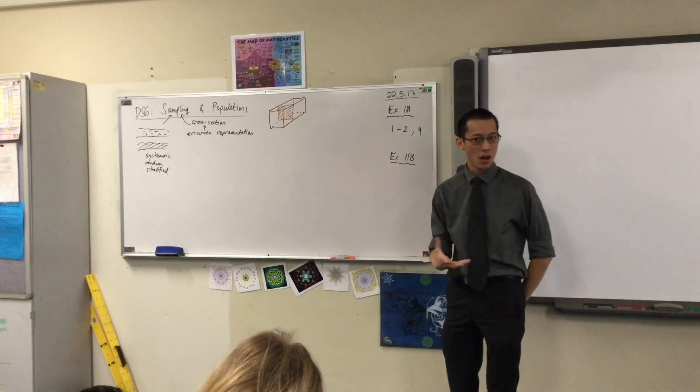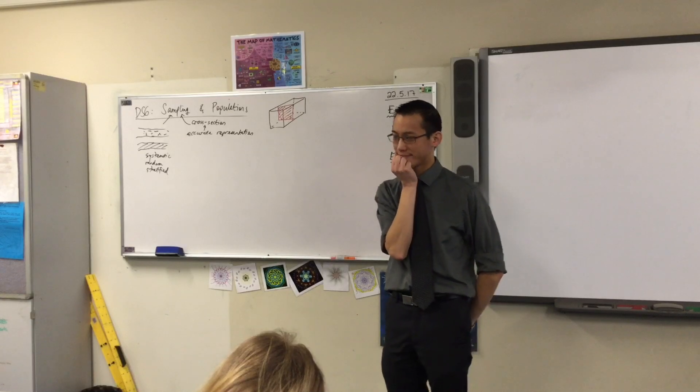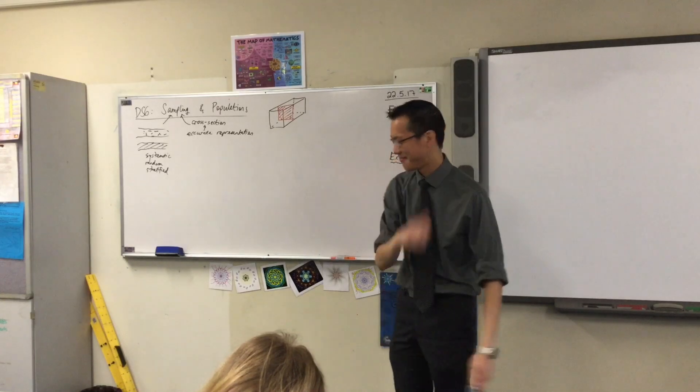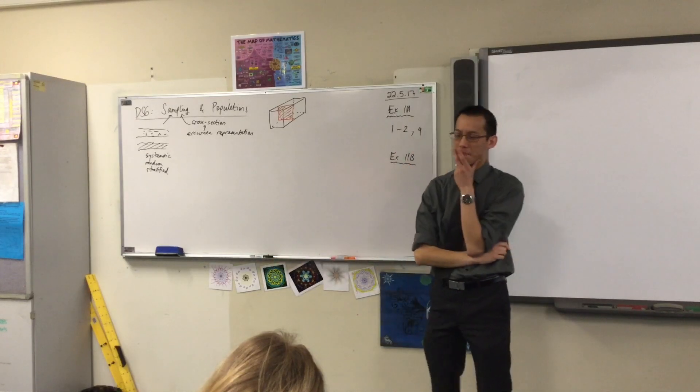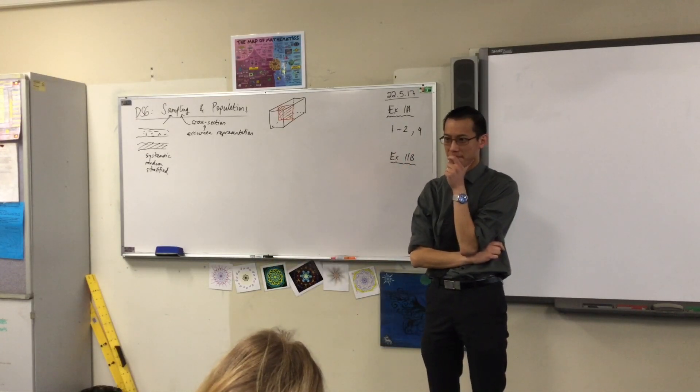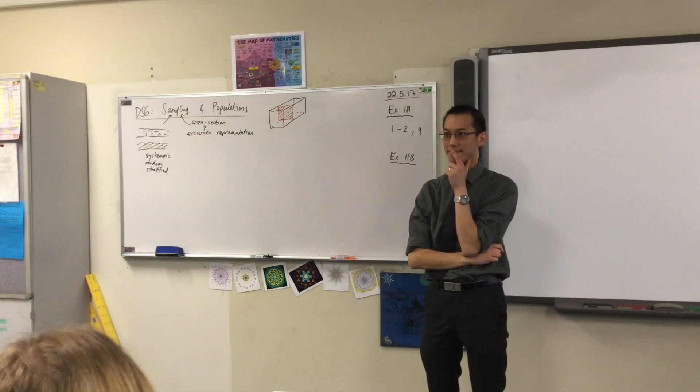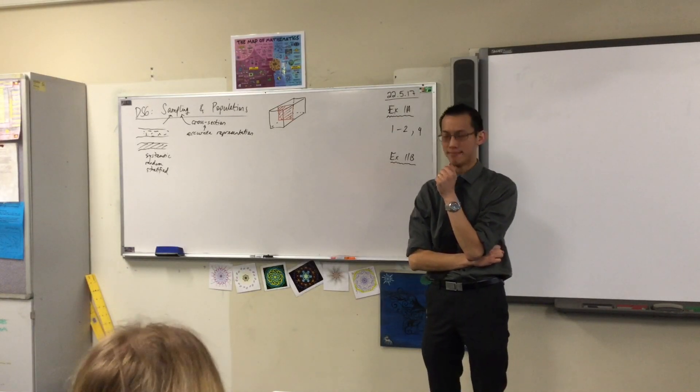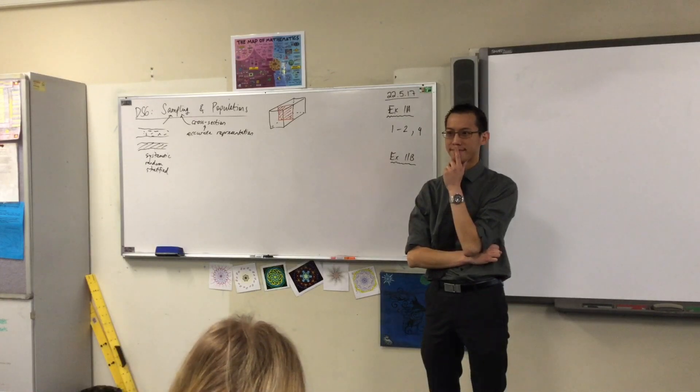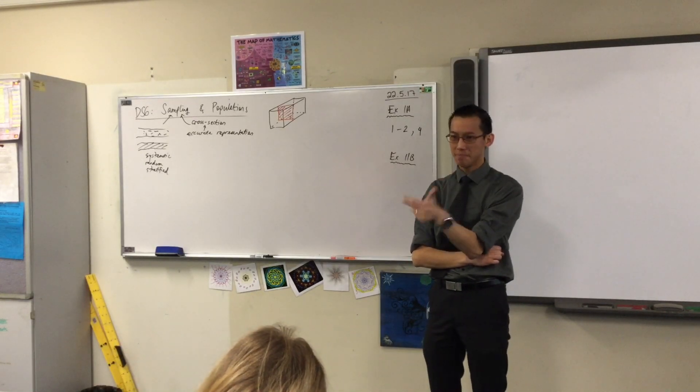What would it mean to have a systematic sample of a population? What could we do? Systematic is like, I remember this very specific example, you're standing in a restaurant at the door, and maybe every 20th person that comes past, you ask them, how is your experience or something? And so you use that every 20th person as a gauge for how everyone felt. Perfect, yes.